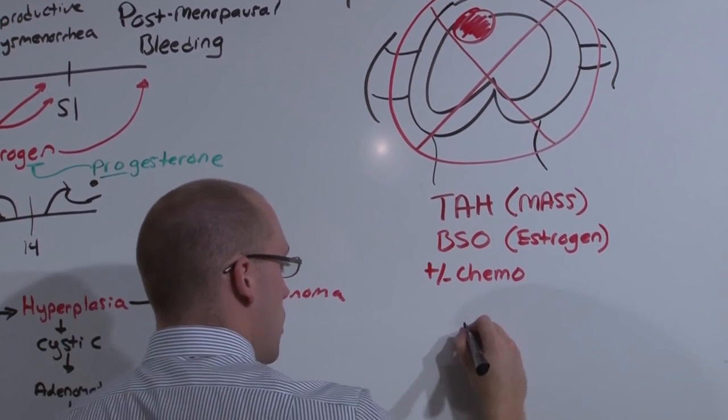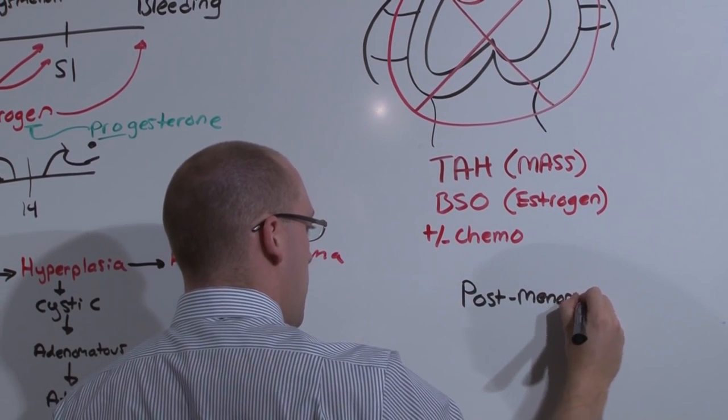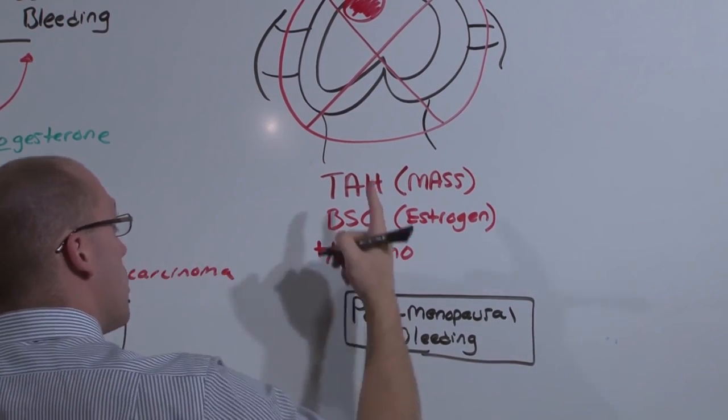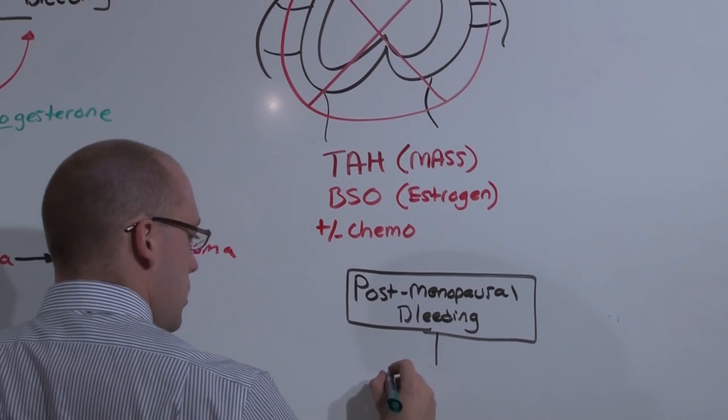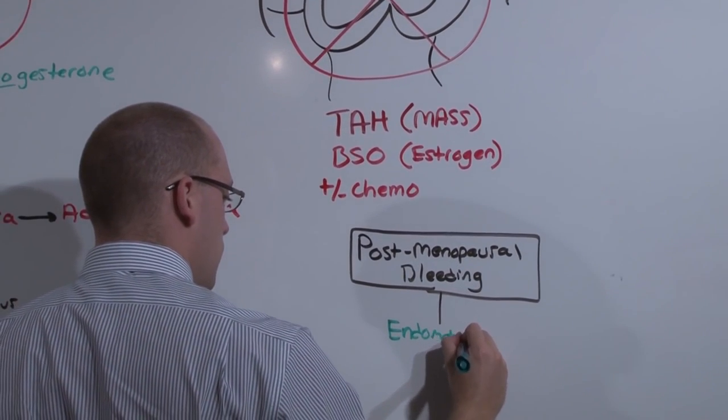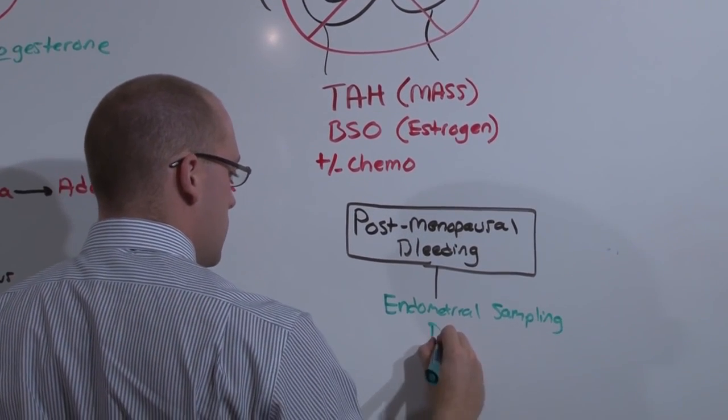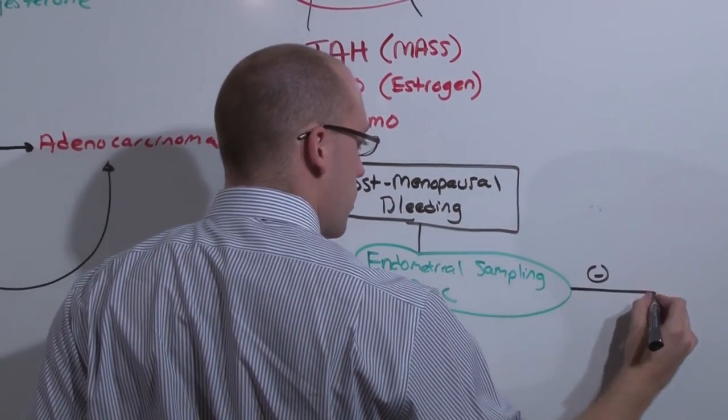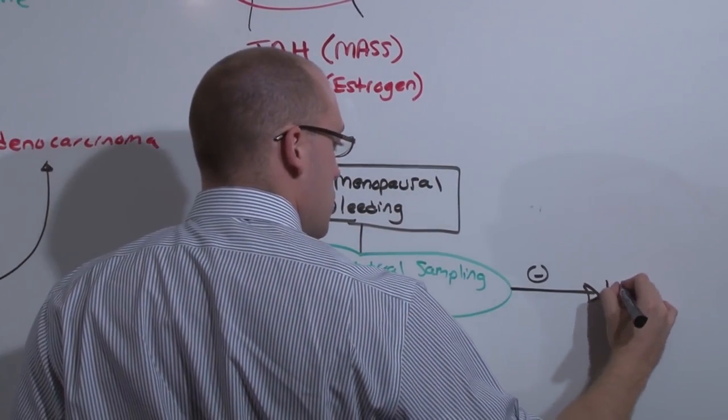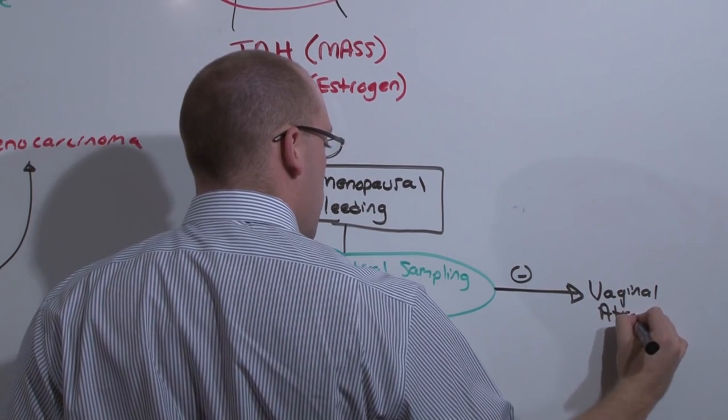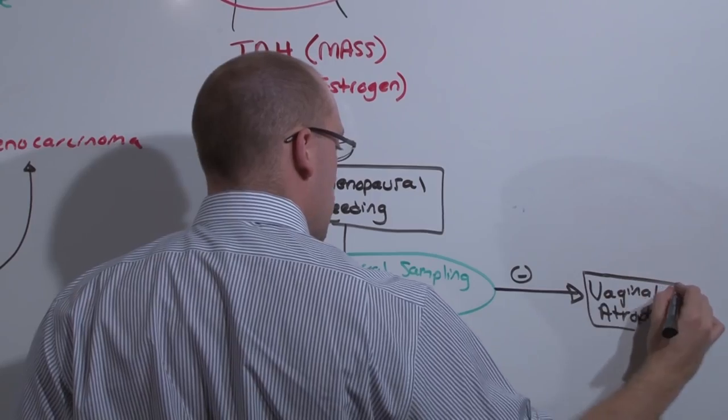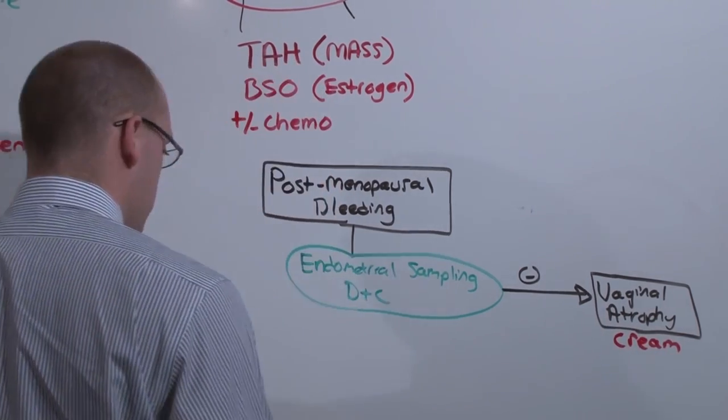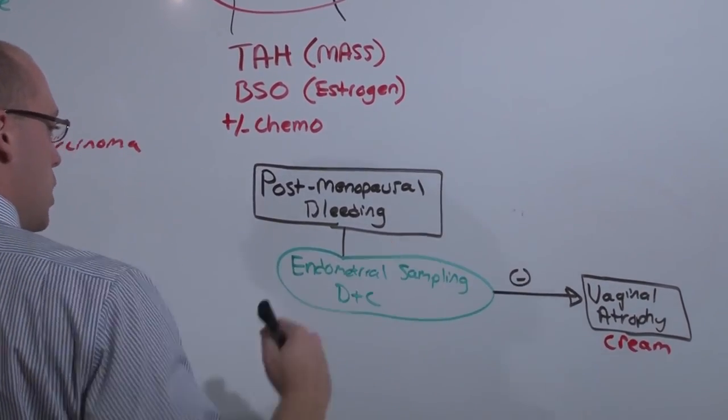If someone comes in complaining of postmenopausal bleeding, you know that there's a cancer of the endometrium. So the way you detect it is with endometrial sampling, that is a D&C, dilation and curettage. If you find nothing, no cancer at all, the most common cause of postmenopausal bleeding is vaginal atrophy. So if you see a postmenopausal bleeder, rest assured that more than likely it's vaginal atrophy. But you do not want to miss cancer, so do the endometrial sampling anyway. If vaginal atrophy, treat with creams. This estrogen cream does not increase exposure of the endometrium to produce cancer.